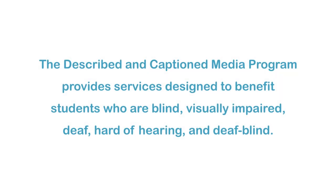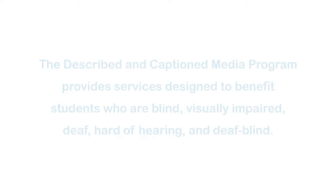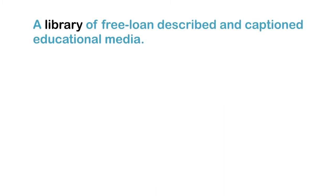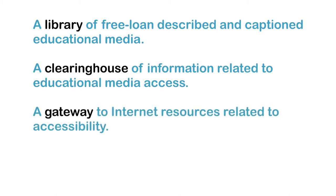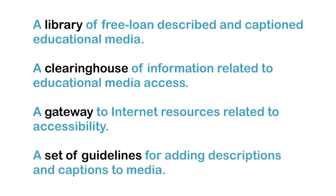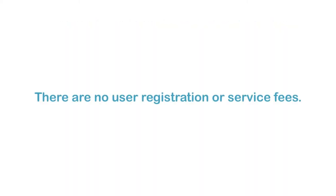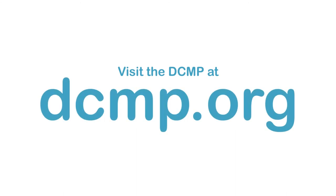The Described and Captioned Media Program provides services designed to benefit students who are blind, visually impaired, deaf, hard of hearing, and deafblind. These services include a library of free loan described and captioned educational media, a clearinghouse of information related to educational media access, a gateway to internet resources related to accessibility, and a set of guidelines for adding descriptions and captions to media. There are no user registration or service fees. Visit the DCMP at DCMP.org.